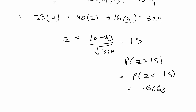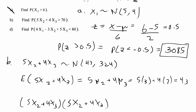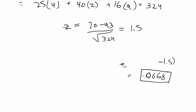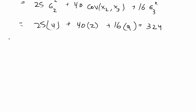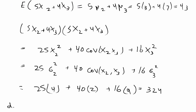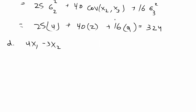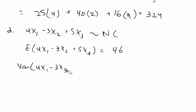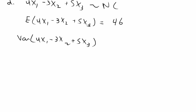The probability z is greater than 1.5 equals the probability z is less than negative 1.5, which is 0.0668. Now for the last part, which looks at a linear transformation with all three variables. I'll find the variance using matrix multiplication. Part d asks to find the probability of 4x1 minus 3x2 plus 5x3. Using the same approach as before, mu comes out to 46.